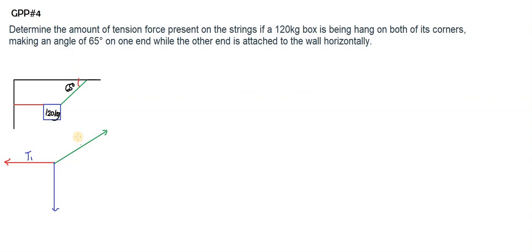Let's label the horizontal tension as T1 and the angled tension as T2, and then we have the weight. T1 has no other component other than its x-component because it lies on the x-axis, while the weight lies on the y-axis. For T2, we draw the components since there's an angle: T2 sub x is the x-component and T2 sub y is the y-component, with 65 degrees still applicable.